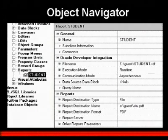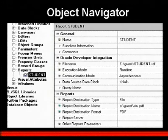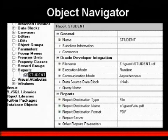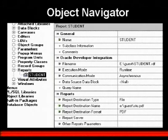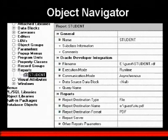Here's an example: I have a student report created in the Object Navigator. Looking at the properties on the right, I've put the full path of the report. The execution mode is runtime, the communication mode is asynchronous, and it's not based on a database block data source. I have a destination type of 'file', with an exact location specified, and the format is PDF — meaning I'm creating an Acrobat file.